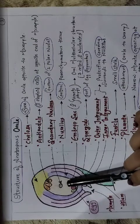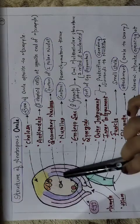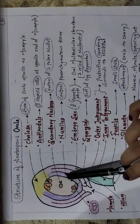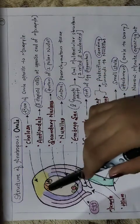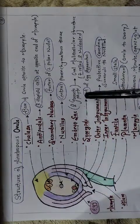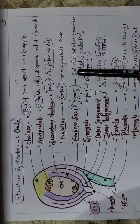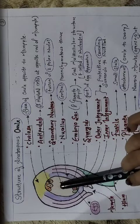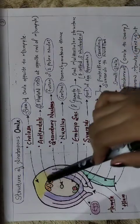Just inner to the integument is the nucellus, which is parenchymatous in nature and plays a very important role in providing nourishment to the developing embryo sac. The main part is the embryo sac, which is exactly called the female gametophyte. It is oval in structure and multicellular — we can count one, two, three, four, five, six, and seven cells.